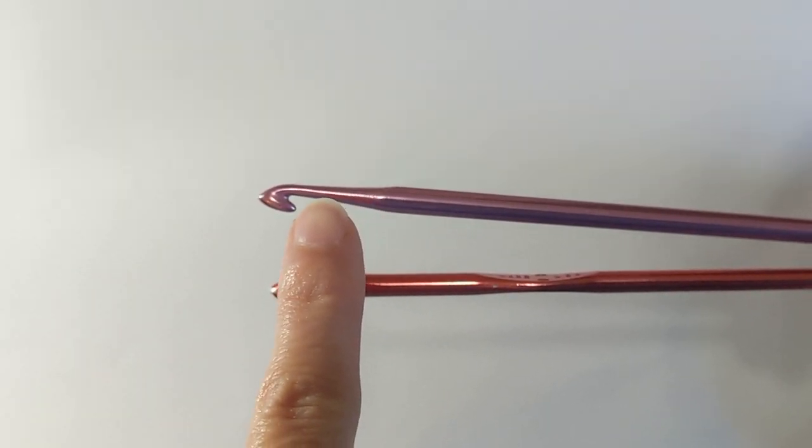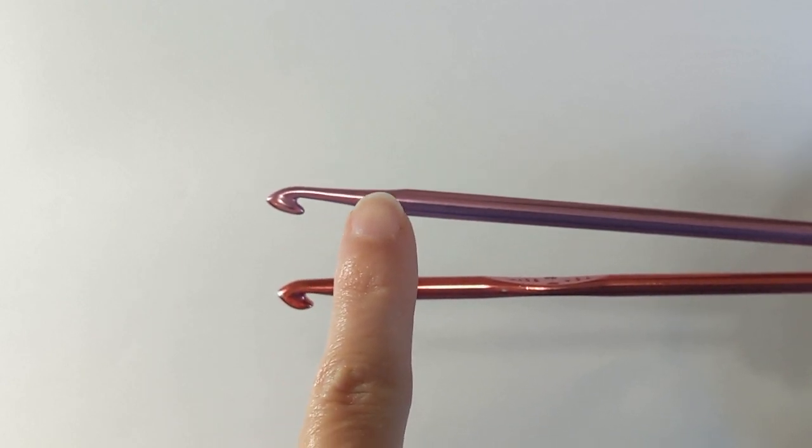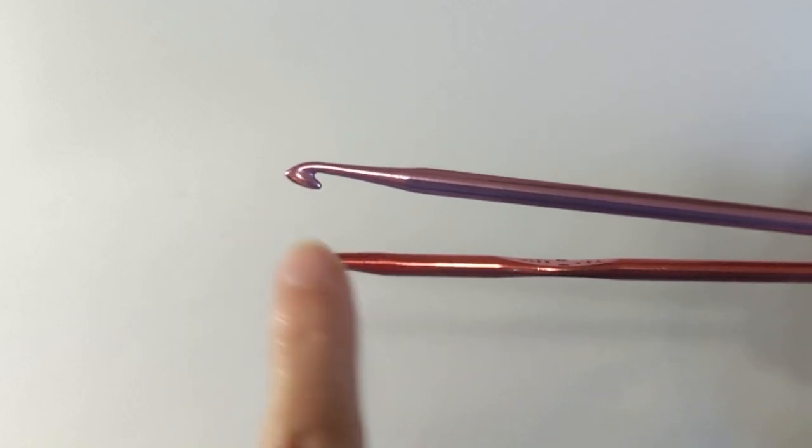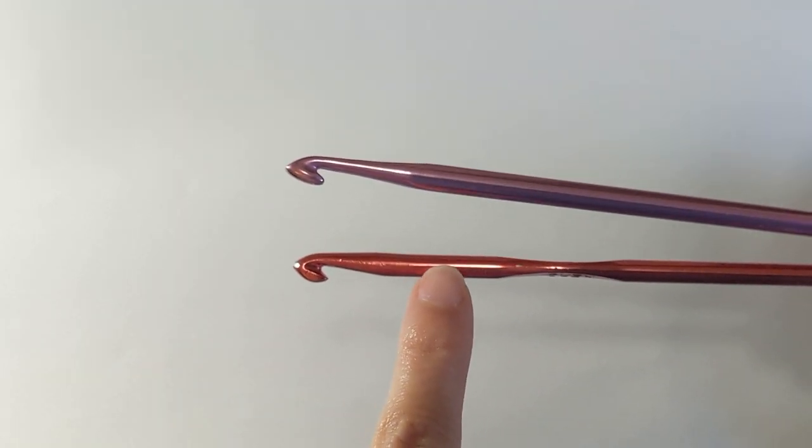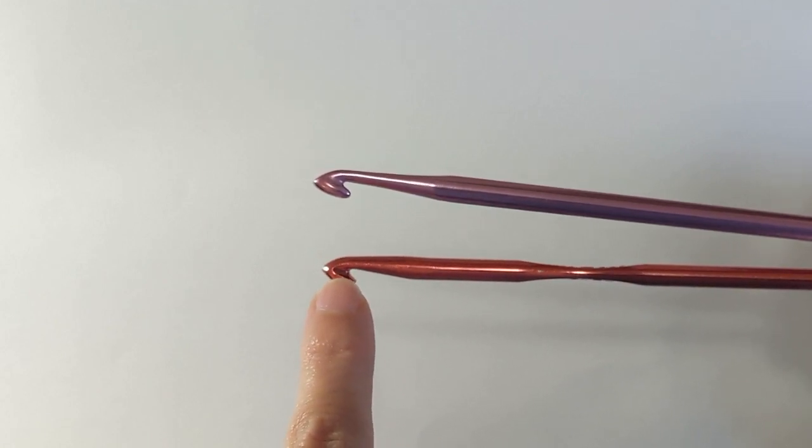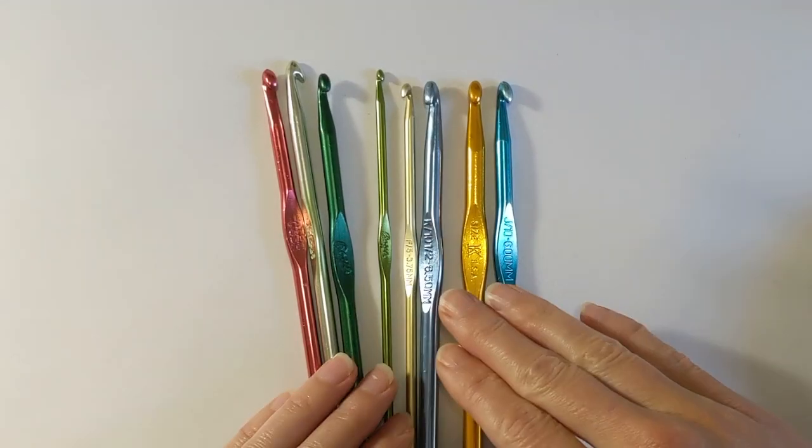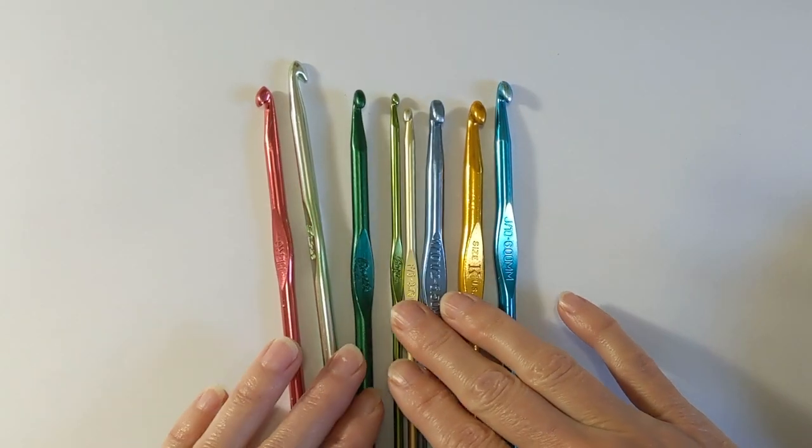Coming up into the throat on the Tunisian hook, we have a softer glide in versus on the standard crochet hook it's a bit more pronounced as you glide into that space.